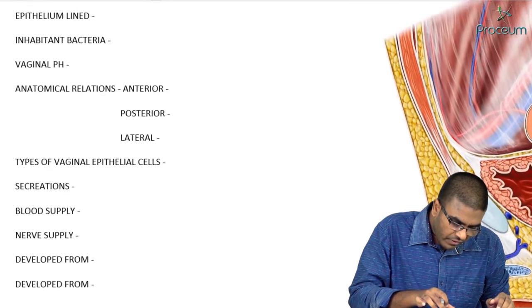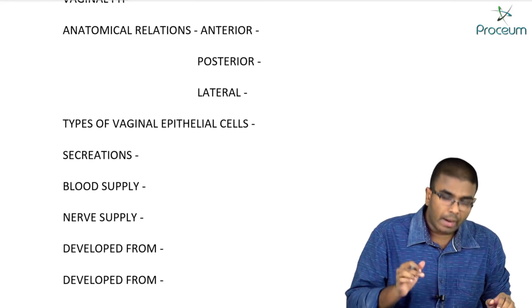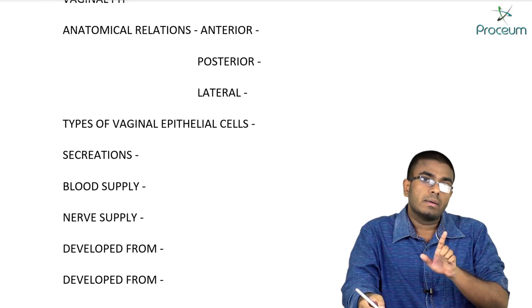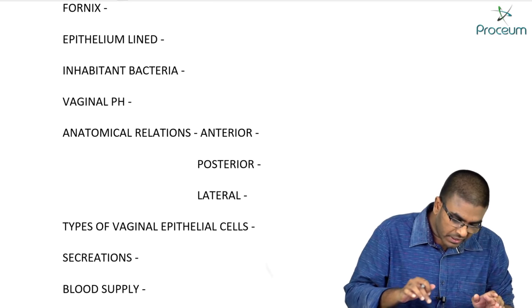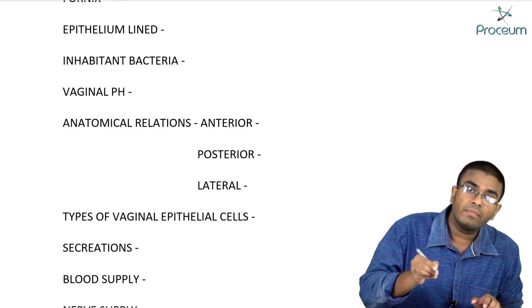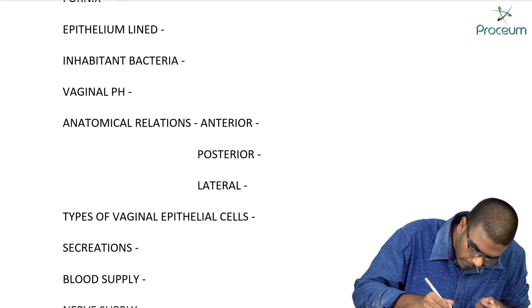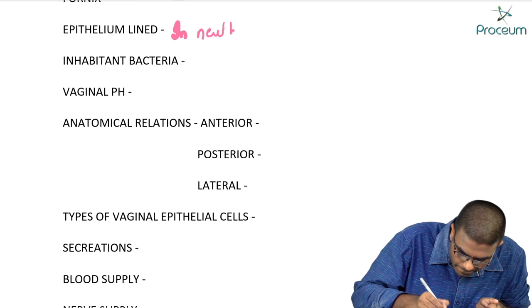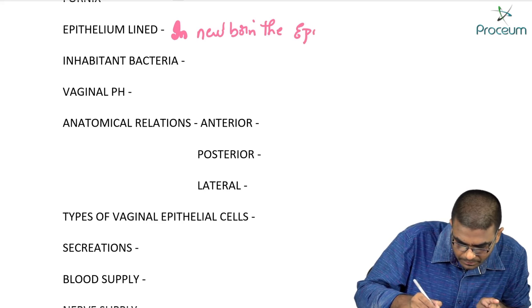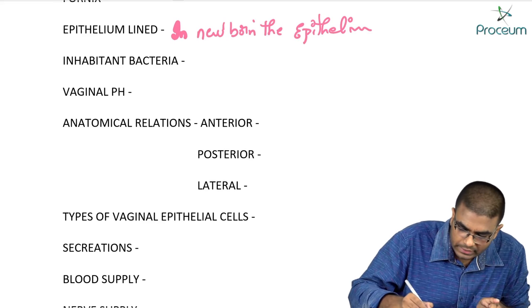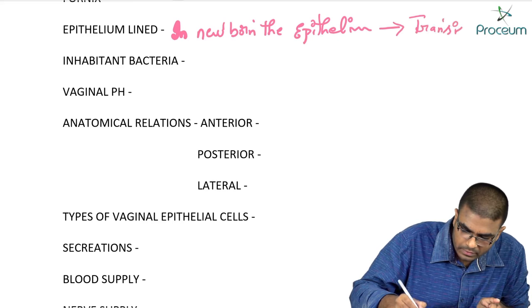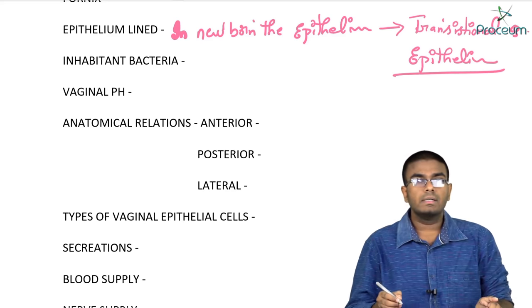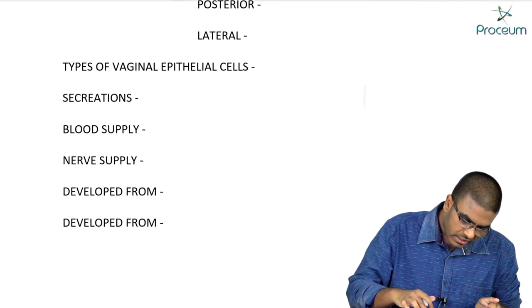The vaginal epithelium is stratified squamous epithelium in adults. However, in a newborn female, the epithelium lining the vagina is transitional epithelium — an important MCQ distinction.